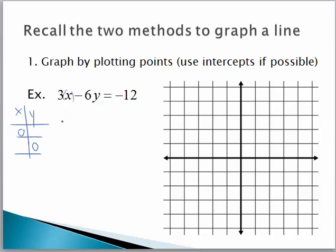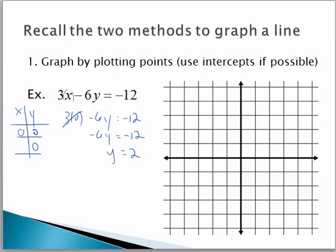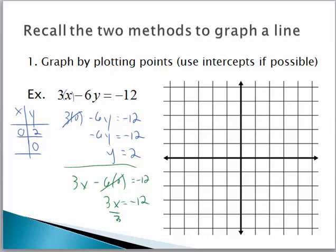That's the y-intercept when we plug in zero for x and solve for y. We like zero because three times zero is zero, and I'm left with negative 6y equals negative 12. Divide both sides by negative 6 to give me a y value of 2. Then plug in zero for y to find the x-intercept. 3x minus 6 times zero equals negative 12. That goes away, leaving 3x equals negative 12. Divide both sides by 3 and x equals negative 4.